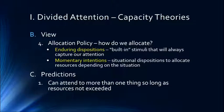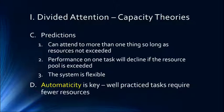Some predictions of capacity theories are that we can attend to more than one thing so long as our resources are not exceeded, performance on one task will decline if the resource pool is exceeded, and the system is flexible — we can shift and divide our attention based on current needs. Automaticity is key: well-practiced tasks require fewer resources. This is why walking can go along with talking, though you'll never walk as fast when talking as when you're by yourself.